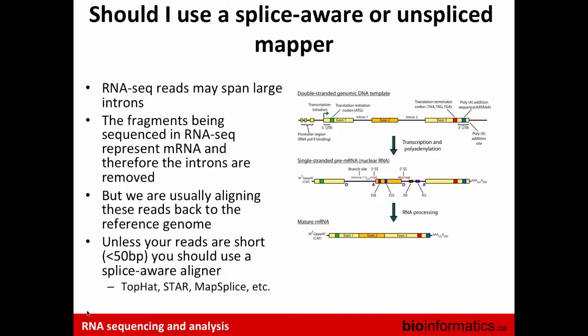Should you use a splice-aware or unspliced mapper? The libraries you've prepared are mRNA libraries that only code for exons, while the whole genome contains both introns and exons. So if you're aligning against the whole genome, you have to pick an aligner that is aware of splice junctions. Otherwise, if you don't want that, you should align to a reference that consists only of the transcriptome.